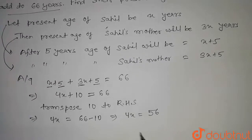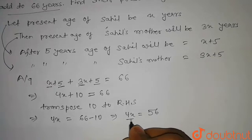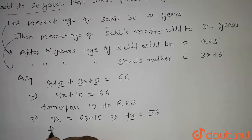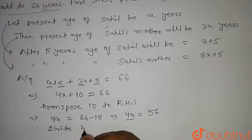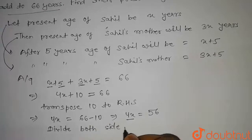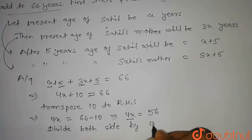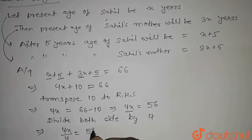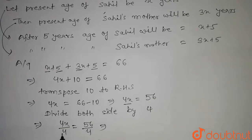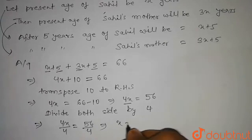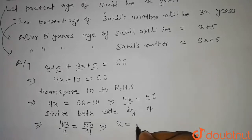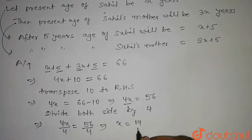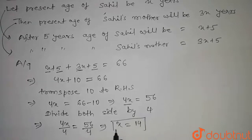Now we have to find the value of x. To remove 4 from this term, we divide both sides by 4. We get 4x by 4 equal to 56 by 4. The 4s cancel and we get x equal to 56 divided by 4, which equals 14. So x is equal to 14.